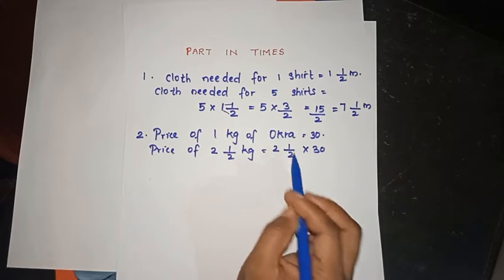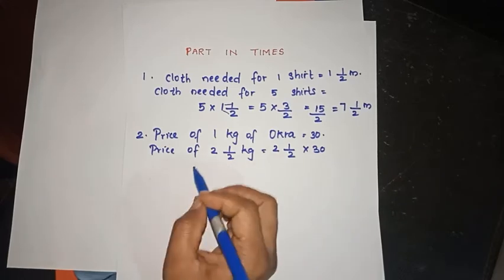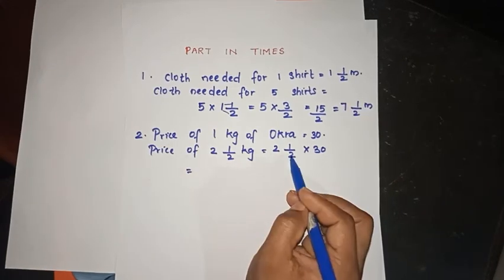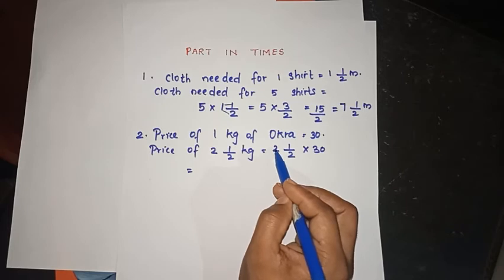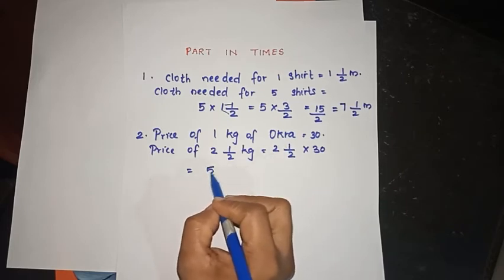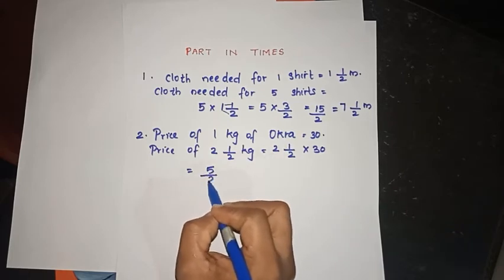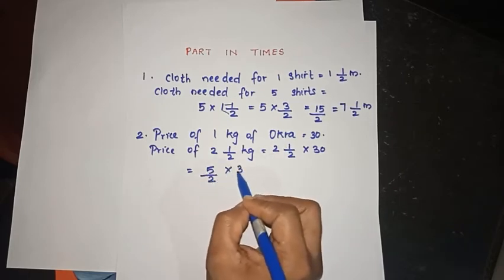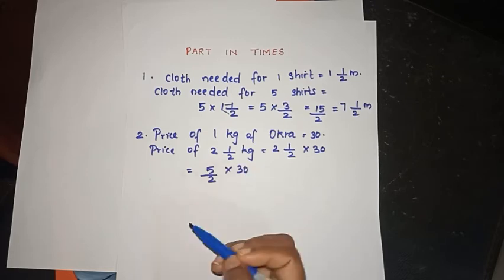In mixed fraction, we convert to simple fraction. 2 times 2 is 4, plus 1 is 5 — so 5 by 2 into 30.